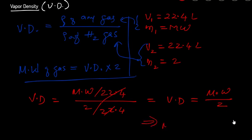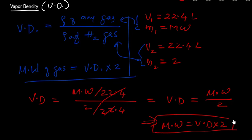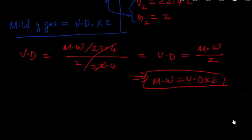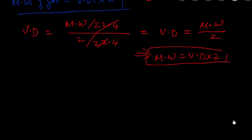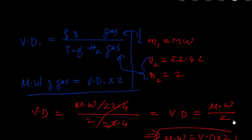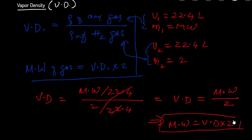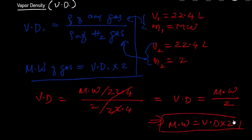This means molecular weight equals vapor density times 2. That's our formula. It's surprisingly simple — vapor density times 2 gives you the molecular mass of the gas — but it comes directly from the definition, so it shouldn't be surprising.